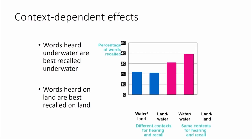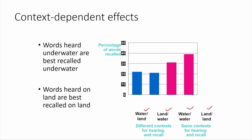An experiment was done with divers to test whether context-dependent memory works. Lists of words were given to divers who either learned the list on land (over the water) or underwater. Retrieval was done both on land and underwater. Those divers who learned the list underwater showed better retrieval underwater, and those who learned on land showed better performance on land. Words heard underwater are better recalled underwater, and words heard on land are better recalled on land.